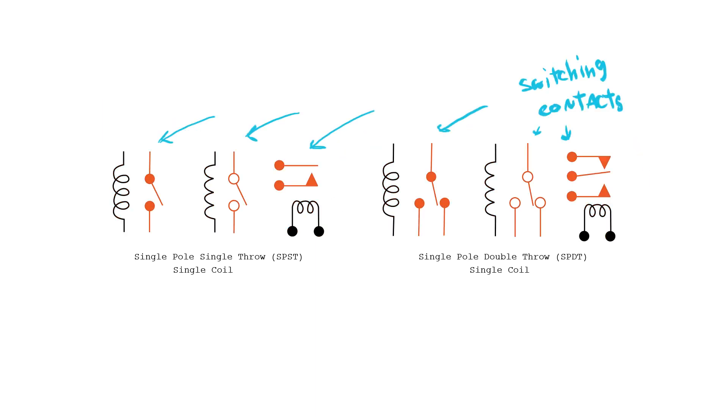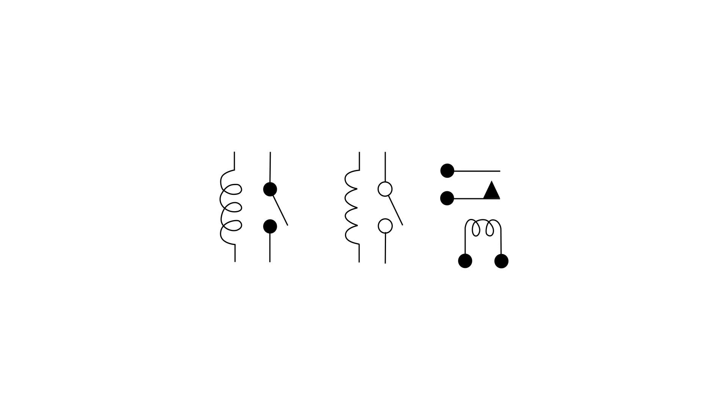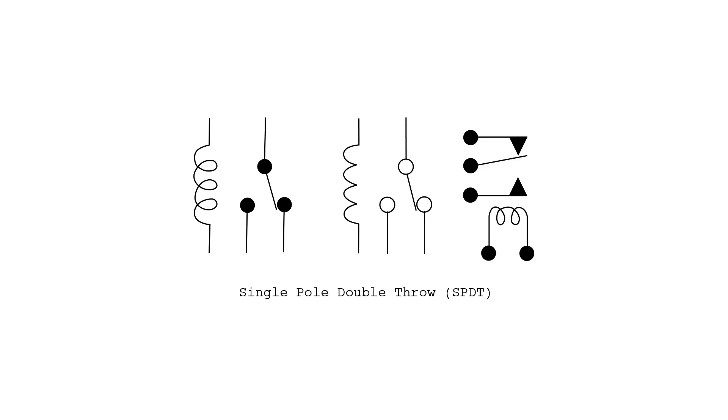For a single throw relay, the switching contact can be normally closed or normally open, depending on the configuration of that particular relay. For a double throw relay, there are three switching contacts: a common, a normally closed, and a normally open.